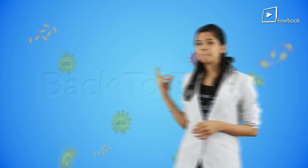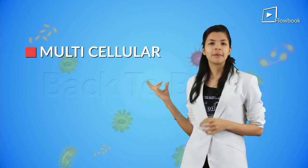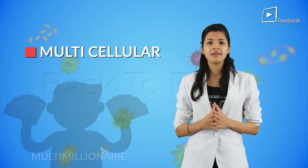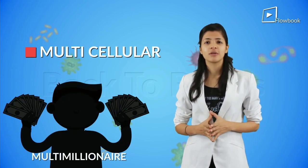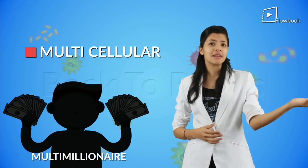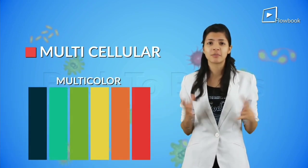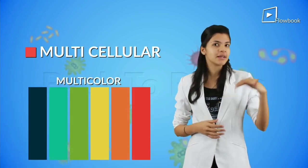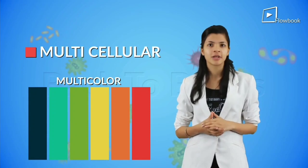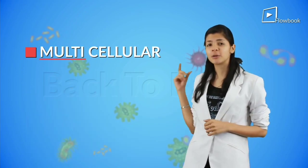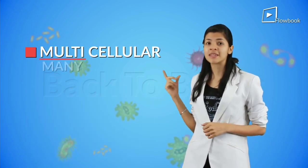Unicellular organisms are really tiny and difficult to be seen with the naked eye. Now, what does the term multicellular mean to you? A multimillionaire is someone who has many millions. Multicolor represents many colors. So, we understand that the term 'multi' means many.